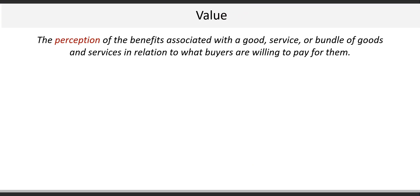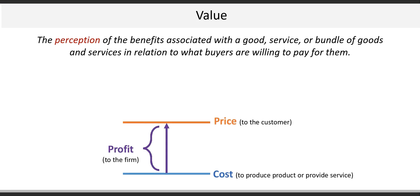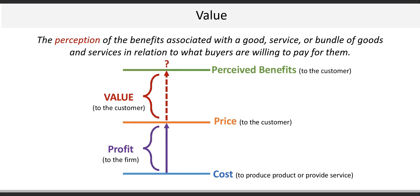The next important topic in Chapter 1 is the concept of value. Value is the perception of benefits associated with a good, a service, or a bundle of goods and services in relation to what buyers are willing to pay for them. Intuitively, we know the difference between the cost to the firm to produce a product or provide a service, and the price charged to the customer results in the profit earned by the firm. But have you ever purchased a product or used a service that you would have been willing to pay more for? For myself, I think of Netflix, which initially priced its subscription at $9.99 per month. Considering all the content available and the ability to watch programs without commercials on my terms, I would have paid double and still been happy. That's value.